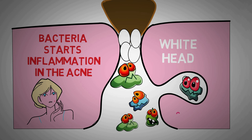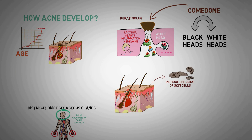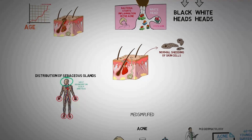When the inflammation doesn't stop, the acne becomes even bigger and goes deeper into the skin, ultimately becoming a cyst. So this is how acne is formed — upon reaching puberty, rising hormone levels trigger increased sebum production by the sebaceous glands. This combined with follicular plugging by shed skin cells and infiltration of bacteria into the pilosebaceous unit leads to the formation of acne, or in layman's language, a pimple.